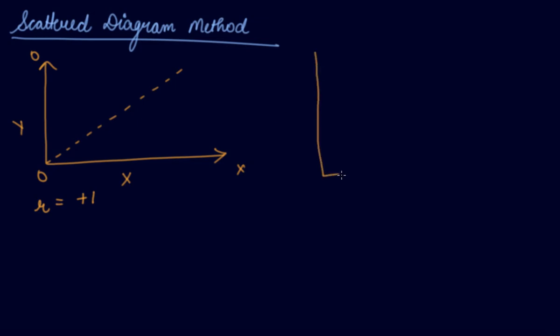Now, if we get a straight line downwards, which means the negative correlation, that is the perfect negative correlation minus 1.